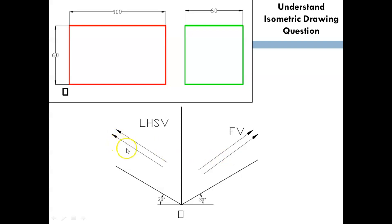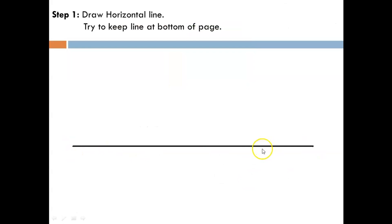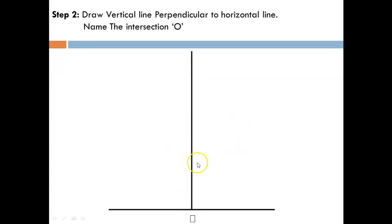First, draw a horizontal line and try to keep this line at the bottom of the page because all the construction is above this edge. Now draw a vertical line intersecting with this horizontal line, and it must be perpendicular to the horizontal line. Name the intersection O—this is a very important point, the origin.